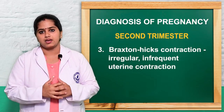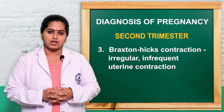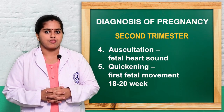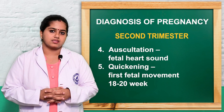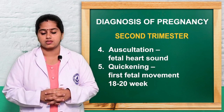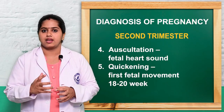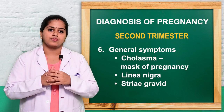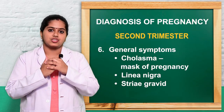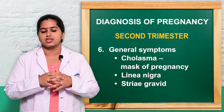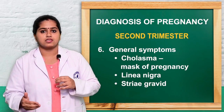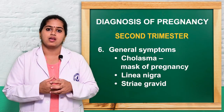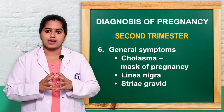On abdominal examination in the second trimester, Braxton Hicks contractions — irregular, infrequent uterine contractions — can be present. Fetal heart rate can be assessed by auscultation. Quickening occurs around the 18th week and is well established by the 20th week, when the woman can feel fetal movement in the uterus. General skin changes include chloasma (the mask of pregnancy), a butterfly-shaped pigmentation over the nasal bridge and cheeks, linea nigra (a dark line from the symphysis pubis to the umbilicus or xiphisternum), and striae gravidarum (stretch marks on the lower abdomen).